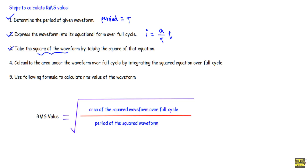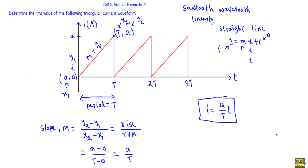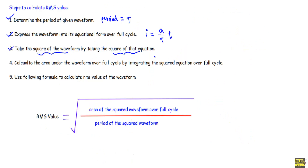By taking the square of that equation — i = (A / T) · t represents the triangular waveform — if I take the square of the alternating quantity i², I will get the square of this triangular waveform. Therefore I will get A² / T² · t². So the equation of the squared waveform is i² = (A² / T²) · t².